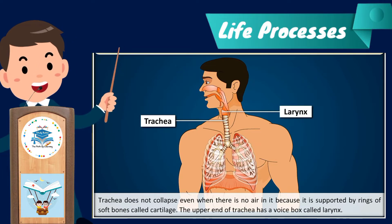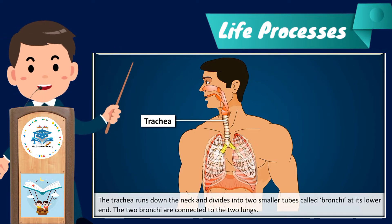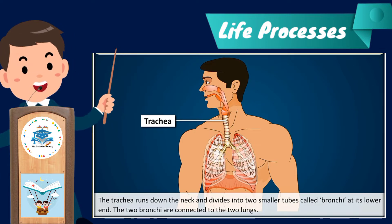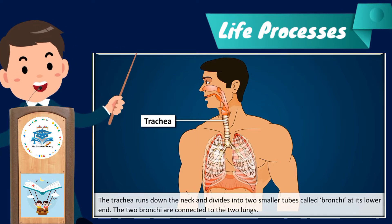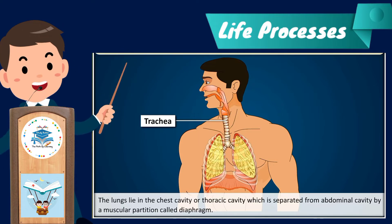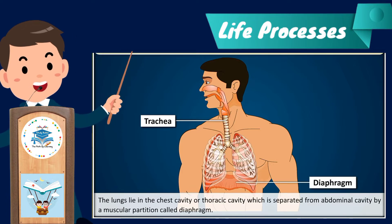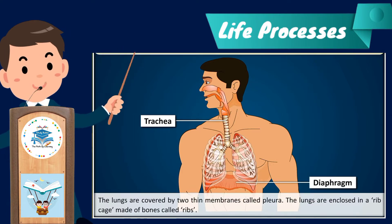The upper end of the trachea has a voice box called the larynx. The trachea runs down the neck and divides into two smaller tubes called bronchi at its lower end. The two bronchi are connected to the two lungs, which lie in the chest cavity or thoracic cavity, separated from the abdominal cavity by a muscular partition called the diaphragm.